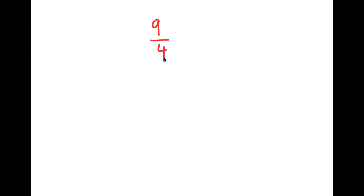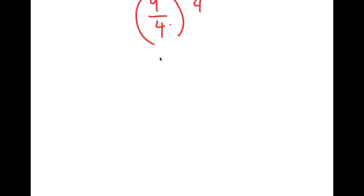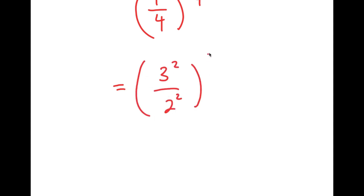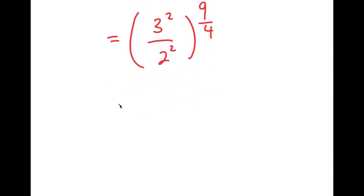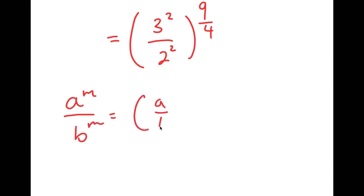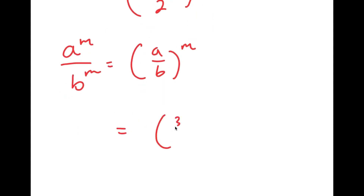In this video, I'm going to solve the problem 9 over 4 to the power of 9 over 4. To solve this, I'm going to first rewrite this as 3 squared over 2 squared to the power of 9 over 4. If I have something in the form a to the power of m over b to the power of m, this is equal to a over b to the power of m. So 3 squared over 2 squared equals 3 over 2 squared, and I still have this to the power of 9 over 4.